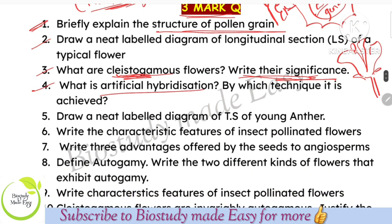Artificial hybridization: definition first, then the three steps — emasculation, bagging, dusting the pollen grains, and rebagging. Next, draw a neat labeled diagram of the TS of a young anther for 3 marks.